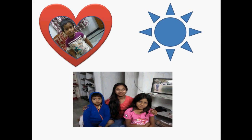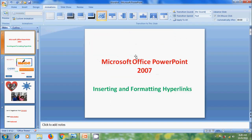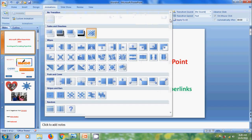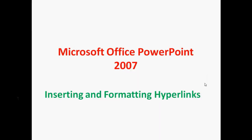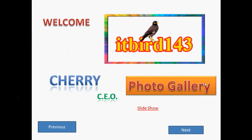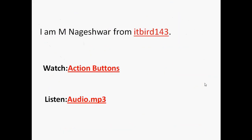If you want to apply the same transition to all the slides in the presentation, come to a slide and select a transition. Here I want to select Shape Diamond from Wipes. To apply this to all slides, click on Apply to All. Now let's run the slide show and we will get the same transition effect for all the slides.